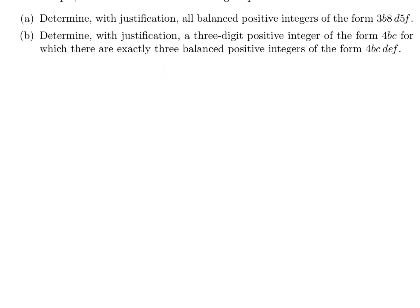And part B. Determine with justification a 3-digit positive integer of the form 4BC for which there are exactly 3 balanced positive integers of the form 4BCDEF. 4BCDEF, for it to match the criteria, 4 times B times C, I should say, is equal to D times E times F. So D times E times F has to, well, there's a few possibilities. It could be 4BC itself, or it could be 4 times C times B. It could be B times 4 times C. B times C times 4. C times 4 times B. Or C times B times 4, like that. In that order.